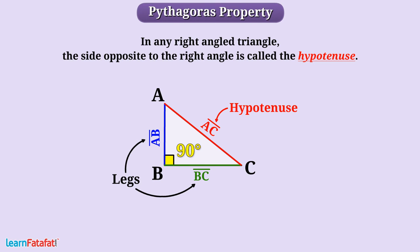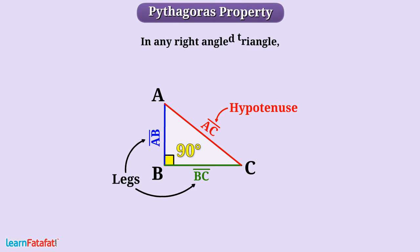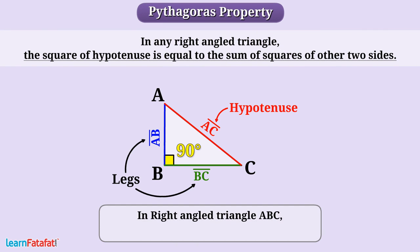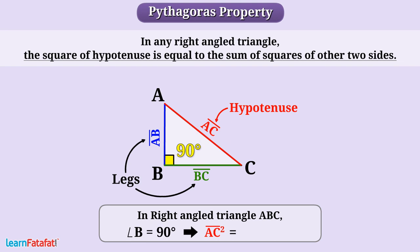Pythagoras property states that in a right angle triangle, the square of the hypotenuse is equal to the sum of squares of the other two sides. So if ABC is a right angle triangle with right angle at B, then AC squared is equal to AB squared plus BC squared.